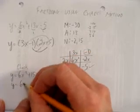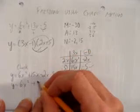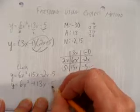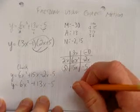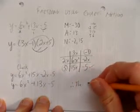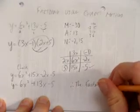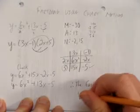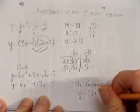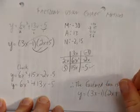When I simplify those two middle terms, I get back the question. Therefore, I'm pretty confident in my solution. The factored form is y equals 3x minus 1 times 2x plus 5.